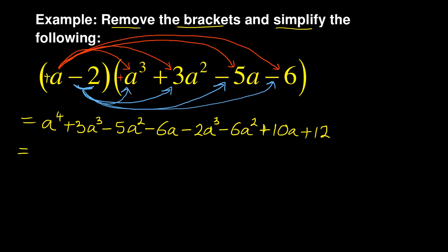Let's start with the A to the power of 4. If there is no other A to the power of 4, we just write it as the first A to the power of 4. Then we look for the power of 3 — I've got one there and one there. You take it with the number, so it's plus 3A to the power of 3 and minus 2A to the power of 3. The next one — do I have power of 2? Yes, I've got that and that — so those are alike.